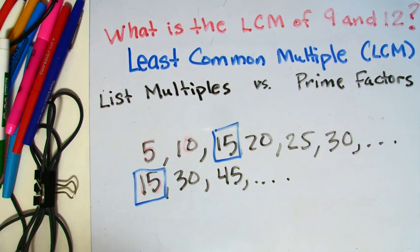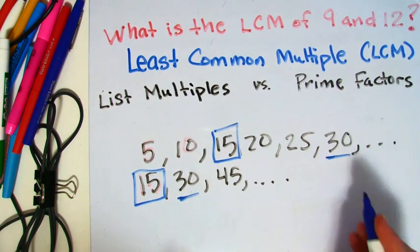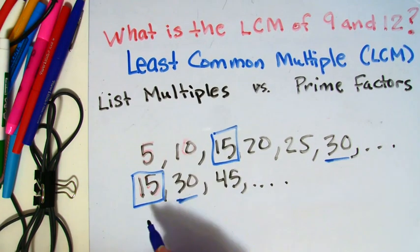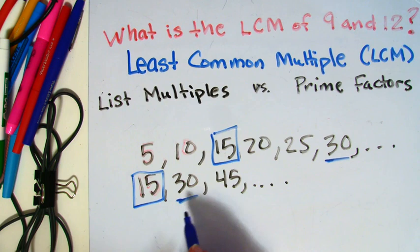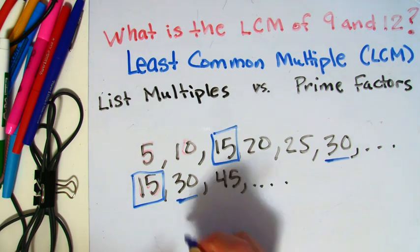And you can see that 30 is also a common multiple for both 5 and 15. But I want to choose the lowest or least common multiple, so this 15 would be that. That would be the LCM.